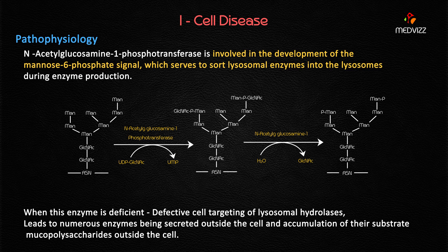This enzyme is responsible for the development of the mannose-6-phosphate signal, which is involved in sorting all lysosomal enzymes into lysosomes during enzyme production. The sorting out of lysosomal enzymes is done by the mannose-6-phosphate signal, and the development of this signal is performed by N-acetyl glucosamine-1-phosphotransferase.